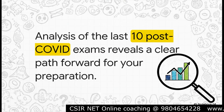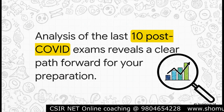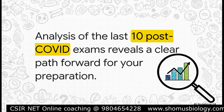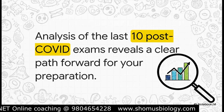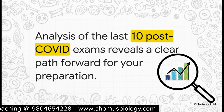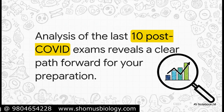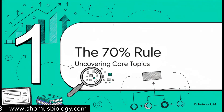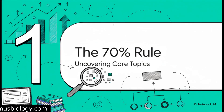But here's the thing — what if I told you there's a pattern hiding in all that chaos? The data, especially from the recent post-COVID exams, actually shows us a very clear path forward. So stick with me, because by the end of this you're not just going to feel less overwhelmed — you're going to have a precise, actionable strategy to actually conquer this unit. Let's get right into our first major insight. I like to call this the 70% rule. This one idea, pulled straight from recent exam trends, is going to completely change how you look at this unit.